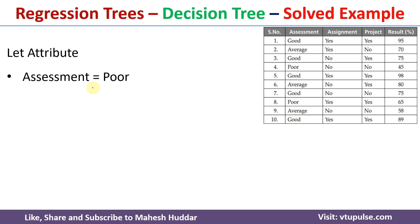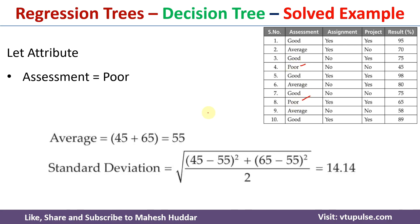For assessment = poor, we have only two values: 45 and 65. The average is (45 + 65) / 2 = 55. The standard deviation is the square root of [(45 − 55)² + (65 − 55)²] divided by 2, which equals 14.14.